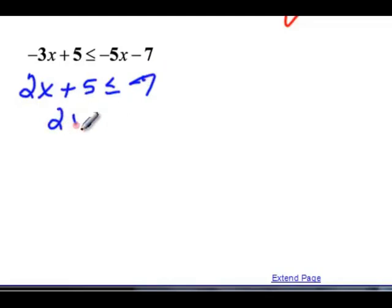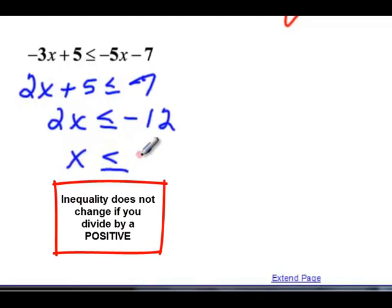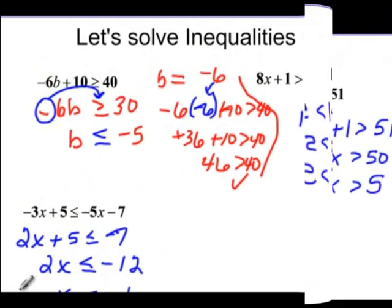Then I subtract the 5 from both sides and 2x is less than or equal to negative 12. And I divide by positive 2 so my inequality stays the same. On this side I have x. And negative 12 divided by positive 2 will be negative 6.